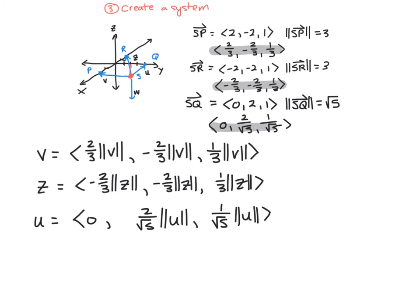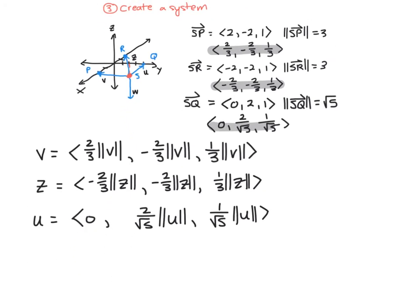We also need a vector for the weight. Since the weight goes straight down, it only has a Z component. X and Y are 0. The weight is 480 pounds going down, so the weight vector W is (0, 0, -480).